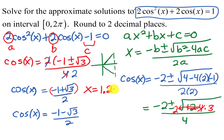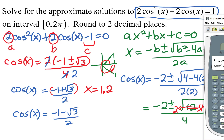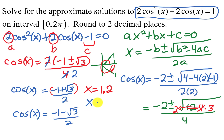To find the quadrant 4 angle, we take 2π minus the unrounded calculator value for greater accuracy. Doing 2π minus 1.196... gives approximately 5.09. So the second solution from this value is x equals 5.09.